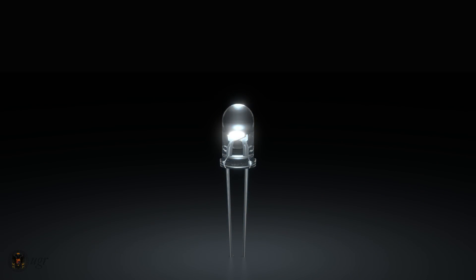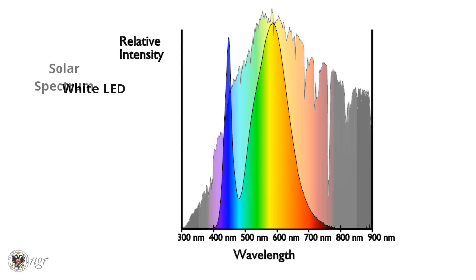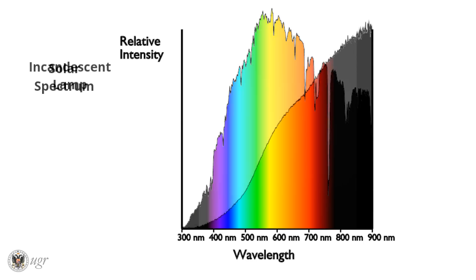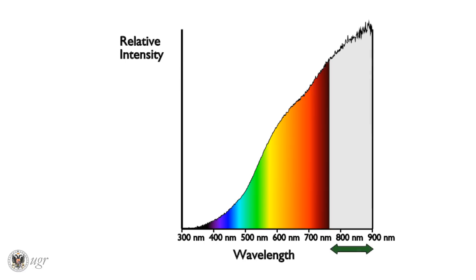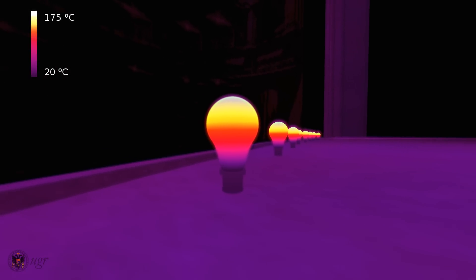This is the spectrum obtained for a white LED, and we can compare it with the spectrum of sunlight. A large proportion of the spectrum that an incandescent lamp provides — which has physical mechanisms different from the LED — is in the infrared. As a result, the incandescent lamp radiates a great deal in an energy range that is not useful for lighting, and therefore it becomes very hot. Consequently, its efficiency is much lower.